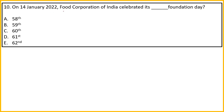On 14 January 2022, it was the Food Corporation of India's foundation day. Which number foundation day was it? Options: 58th, 59th, 68th, 61st, or 62nd. The right answer is 58th foundation day. In 2023 it will be 59th, in 2024 it will be 60th - so this is easy to calculate once you remember the base year.